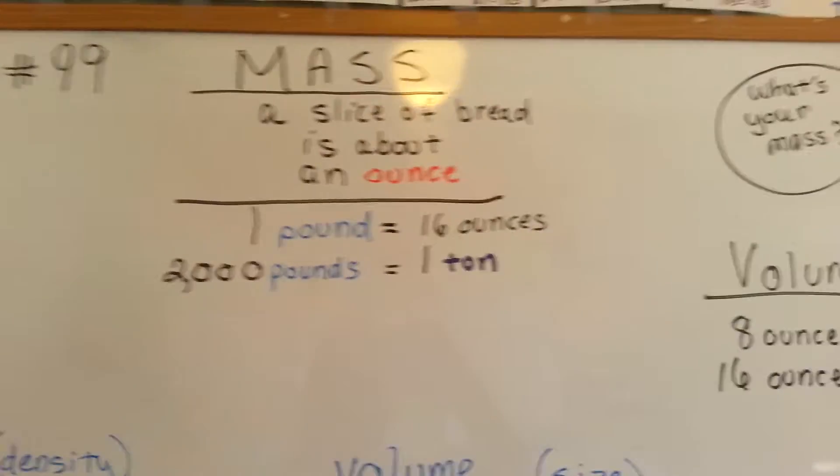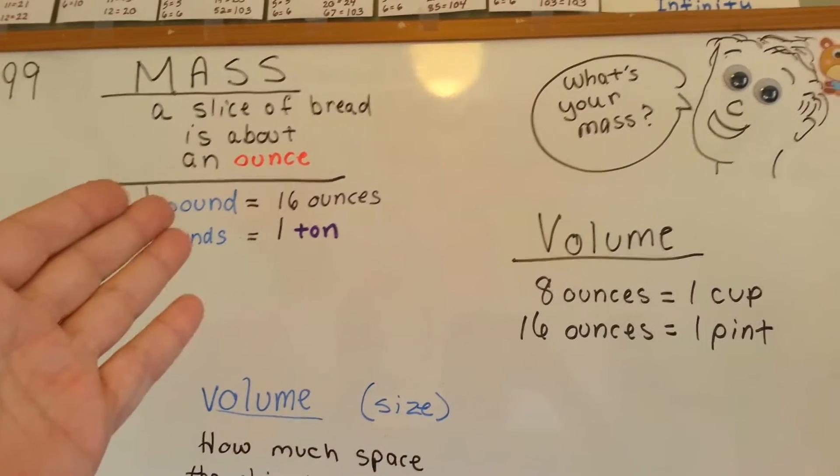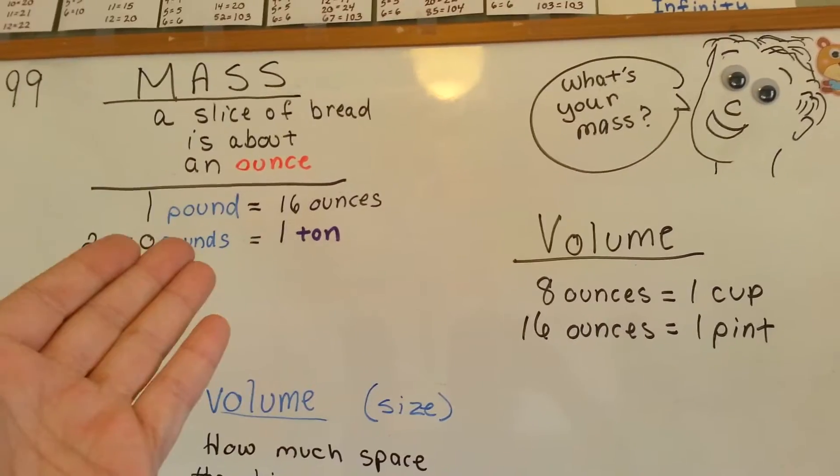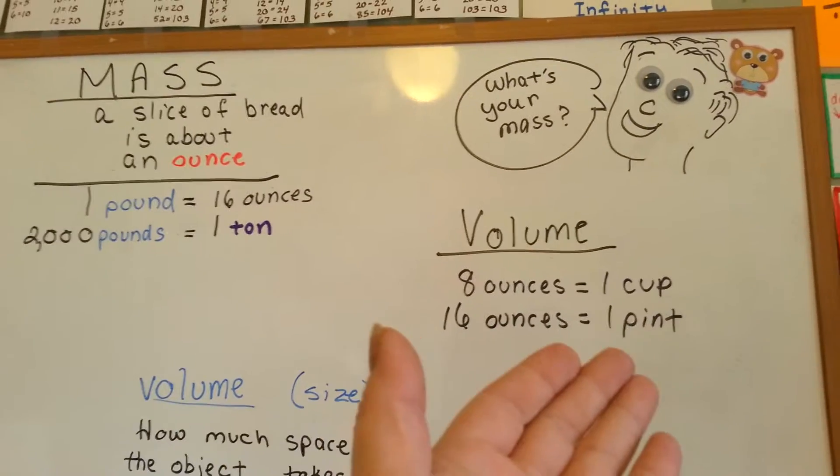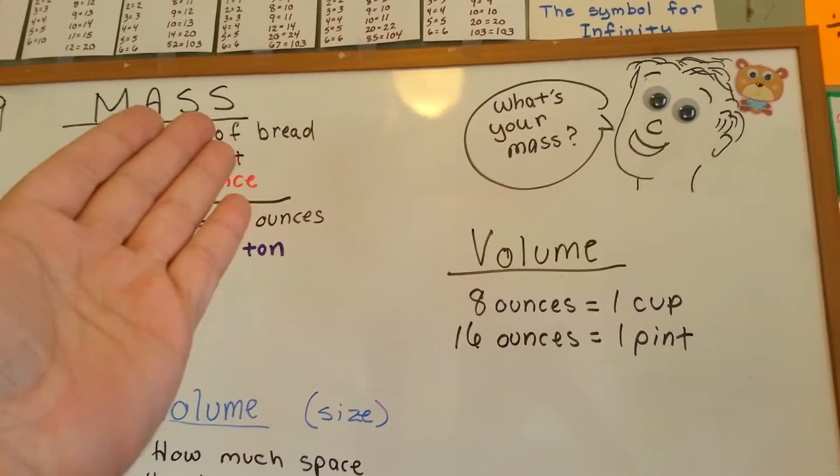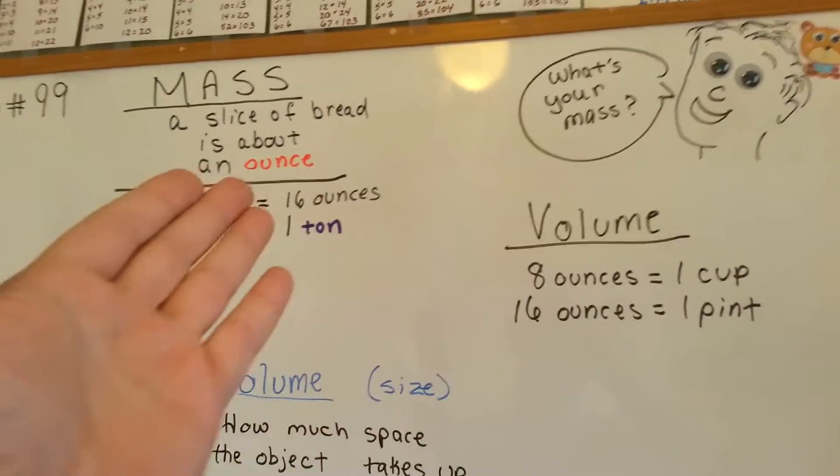Now, we have to explain it because we just talked about how the mass of a slice of bread is an ounce and there's 16 ounces in a pound, and we did volume and said there's 16 ounces in a pint. So what's the difference between mass and volume? Can't they be the same thing? No, they're not.